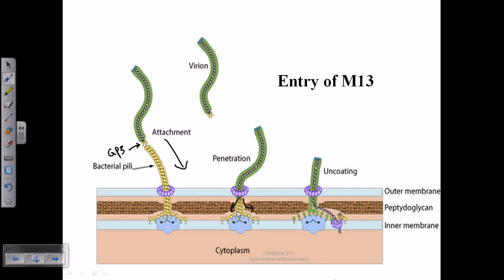As they are entering inside the host cell they are disassembling their components at both ends. The green-colored components, or capsomere proteins, are dissociating and producing a more protective layer in this pore, and then the DNA is projected through this pore outside.